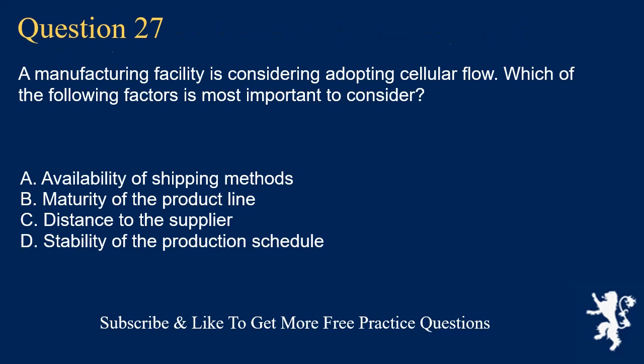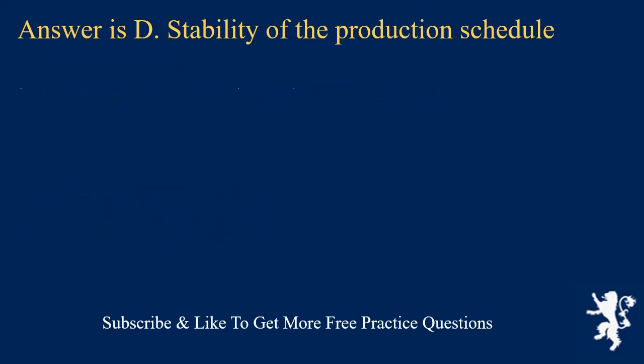Question 27. A manufacturing facility is considering adopting cellular flow. Which of the following factors is most important to consider? A. Availability of shipping methods. B. Maturity of the product line. C. Distance to the supplier. D. Stability of the production schedule. Answer is D. Stability of the production schedule.